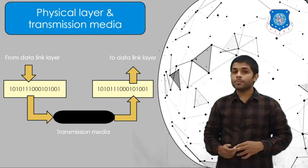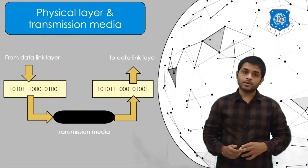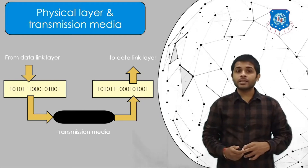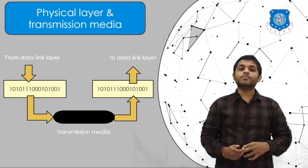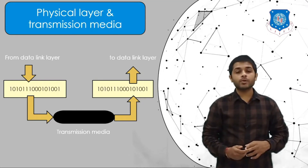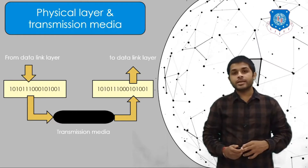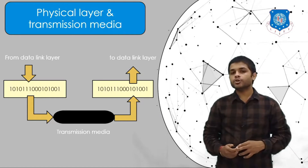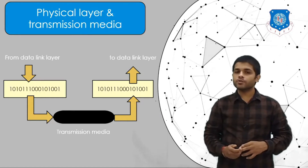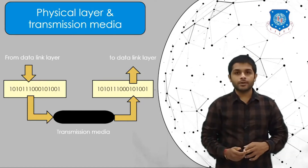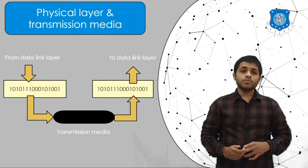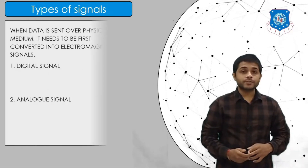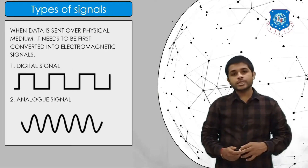At the sender side, the flow of data is from top layer to bottom layer. When the sender is sending data, the bits are converted into a signal. At the receiver side, those signals are converted back into bits and delivered to the upper layer.